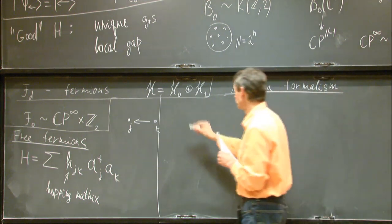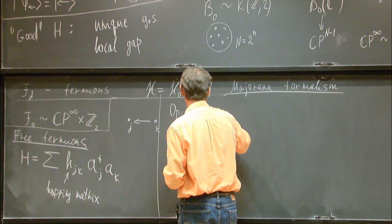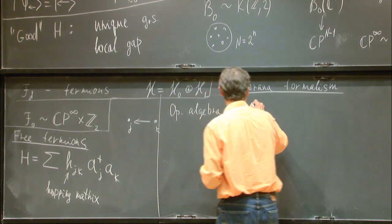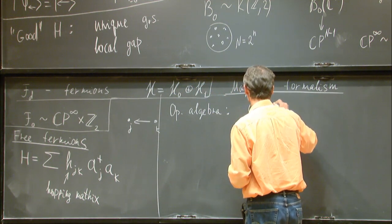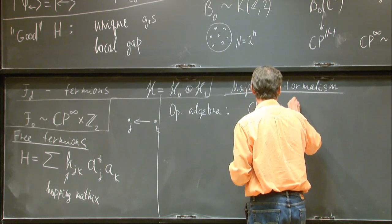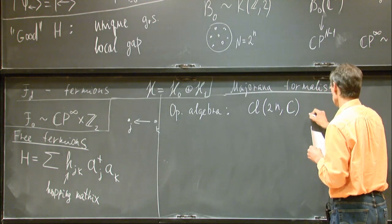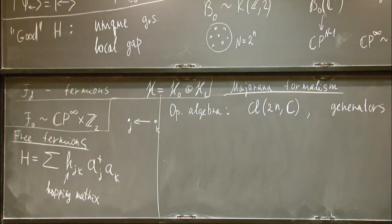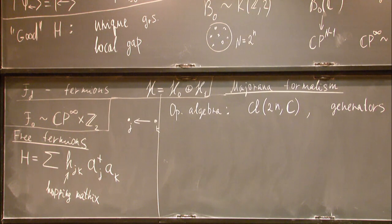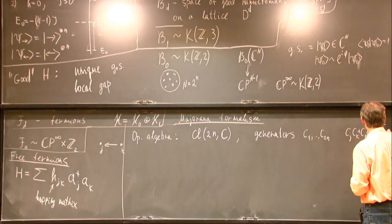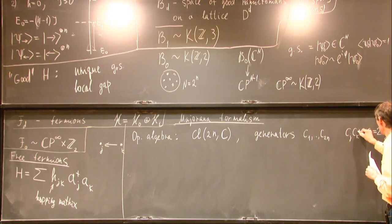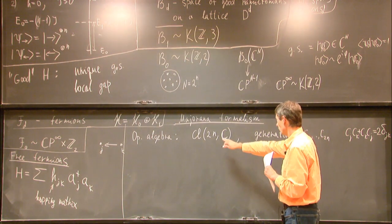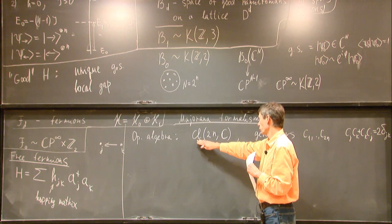But it's just an accident of the world we're living that the electric charge is conserved. And more generally, we can consider fermions with non-conserved charge. And those fermions can be described by Majorana operators more concisely. So I'll consider the Majorana formalism and more general Hamiltonians than that. So let me introduce the operator algebra. It will be the Clifford algebra. It's Clifford of 2N over complex numbers.